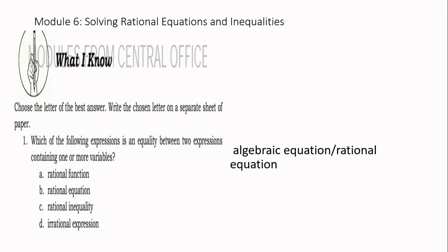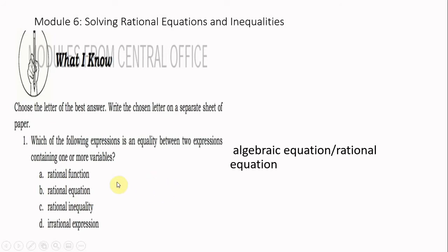Number 1: Which of the following expressions is an inequality between two expressions containing one or more variables? Talking about equality of two expressions determines an algebraic equation, but there's no option here with an algebraic equation. Therefore, the nearer answer is a rational equation.